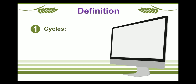Definition of Cycles: Cycles are nothing but a series of biological events that occur in the body. Example: Cardiac Cycle. The cardiac cycle consists of mainly two events — Atrial Systole and Ventricular Systole, as well as Atrial Diastole and Ventricular Diastole. These events are grouped together, and so they are known as cycles.